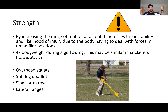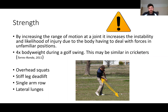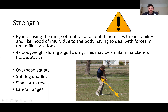Once we feel we've increased those ranges of motion around the joints, we've also increased instability because the body isn't used to dealing with forces at that new end range of motion. We need to make sure we increase strength around those areas — remembering that four times body weight occurs during the golf swing. To increase strength through different ranges of motion, we can use overhead squats — challenging leg strength and scapular stability, requiring large ranges of shoulder rotation and thoracic extension — a stiff leg deadlift to target the posterior chain, single arm rows for scapular stability, and lateral lunges to target internal rotation.